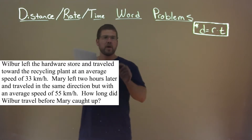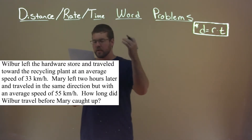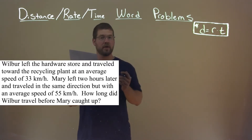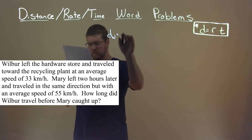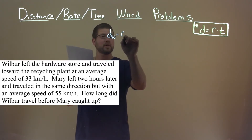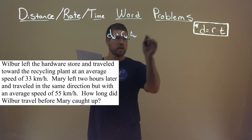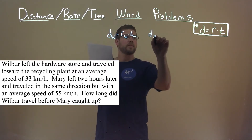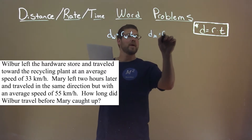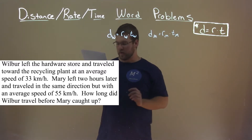So let's go break down distance-rate-time equations for both Wilbur and Mary. The distance of Wilbur is equal to the rate of Wilbur times the time of Wilbur. The distance of Mary is equal to the rate of Mary times the time of Mary.